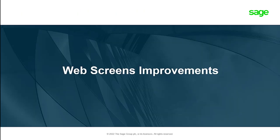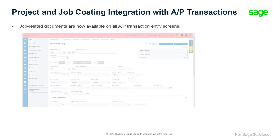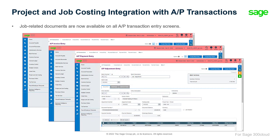This release also includes additional improvements to web screens. If you use Sage 300 Project and Job Costing to manage contracts, you can now enter and work with job-related documents on all AP transaction entry screens. In the previous release, the Accounts Payable Invoice Entry screen included a new checkbox to make the invoice job-related. With this release, the AP Payment Entry and the AP Adjustment Entry screens also include this new job-related option.